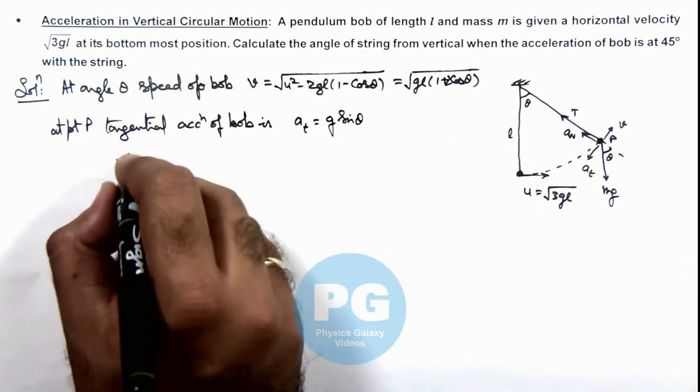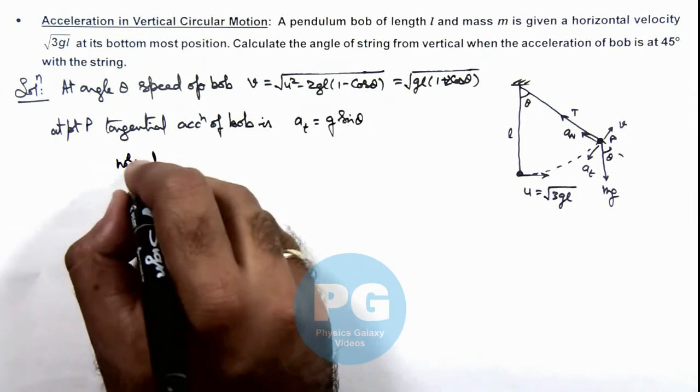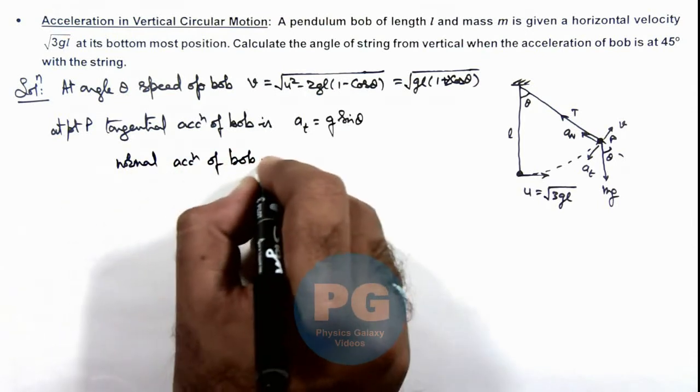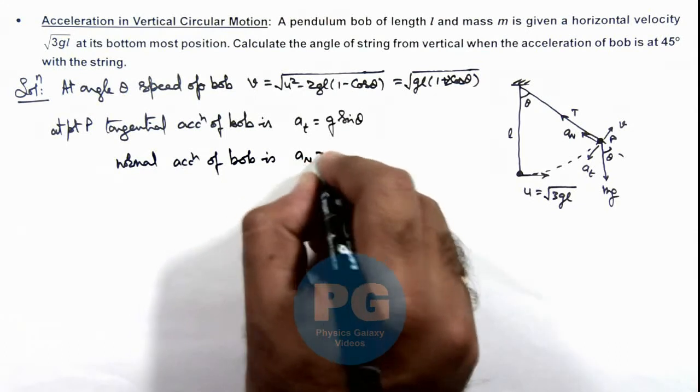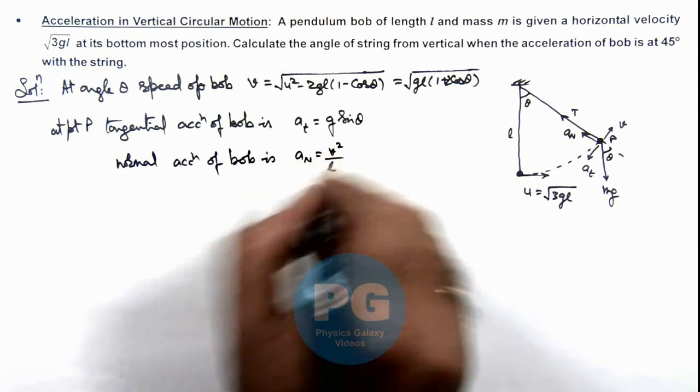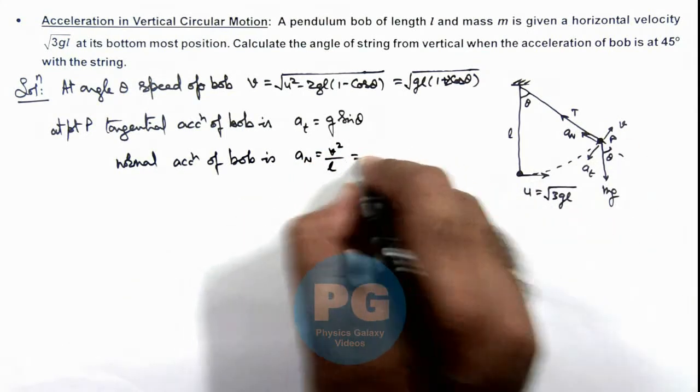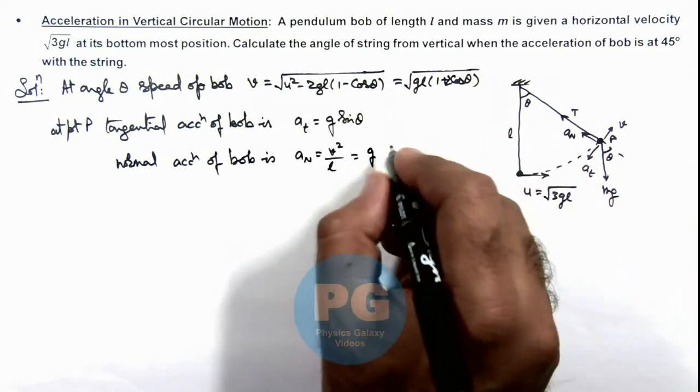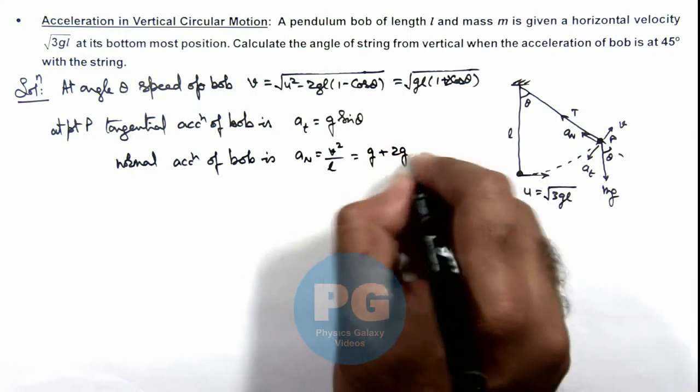At the same point, normal acceleration of bob is given as ay normal = v²/l, which is v² by r, which is given as g(1 + 2cos θ), so this is g + 2g cos θ.